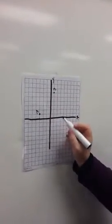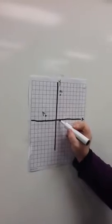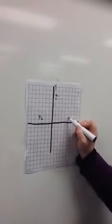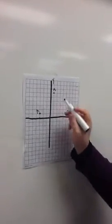C is 5, 1. So origin, 1, 2, 3, 4, 5, 1. And that is my C.